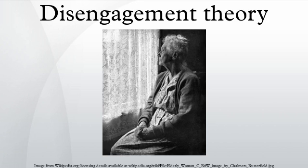The disengagement theory of aging states that aging is an inevitable, mutual withdrawal or disengagement, resulting in decreased interaction between the aging person and others in the social system he belongs to. The theory claims that it is natural and acceptable for older adults to withdraw from society. The theory was formulated by Cumming and Henry in 1961 in the book Growing Old, and it was the first theory of aging that social scientists developed. Thus, this theory has historical significance in gerontology.